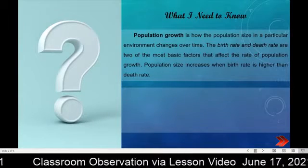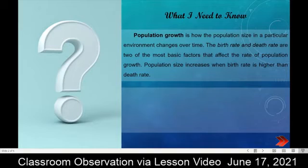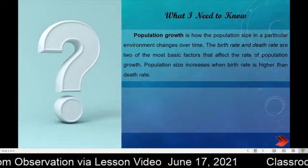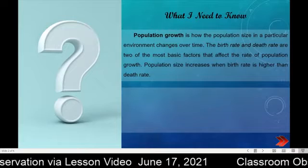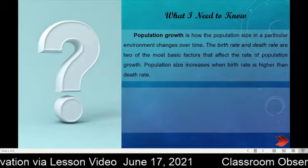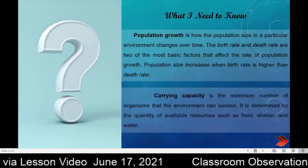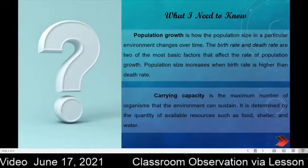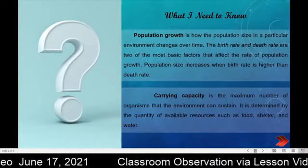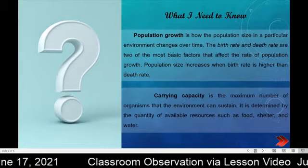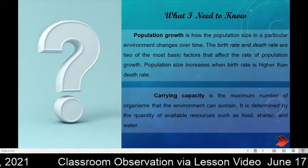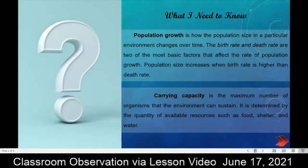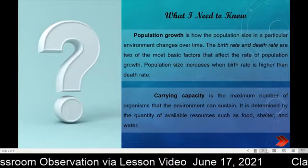The birth rate and death rate are two of the most basic factors that affect the rate of population growth. Population size increases when birth rate is higher than death rate. The next term is carrying capacity. Carrying capacity is the maximum number of organisms that the environment can sustain. It is determined by the quantity of available resources such as food, shelter, and water.